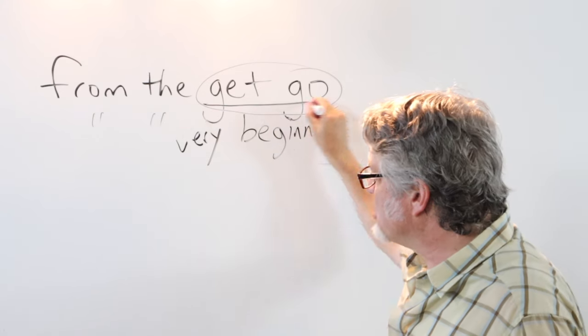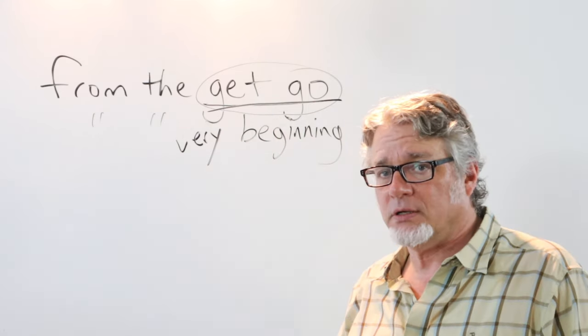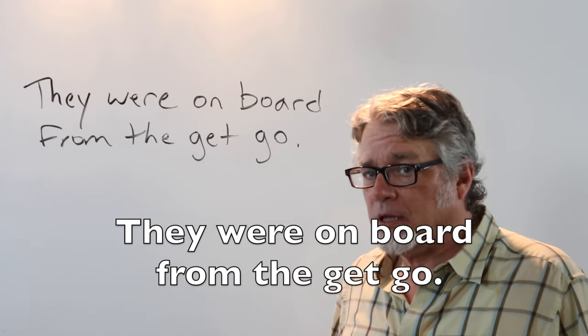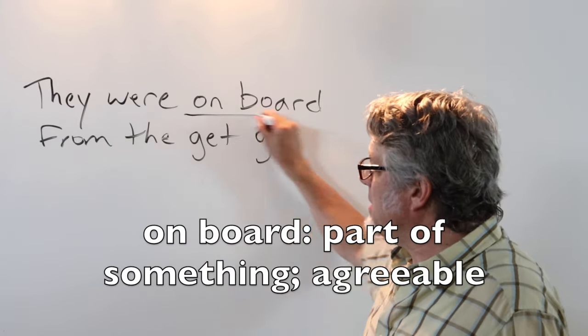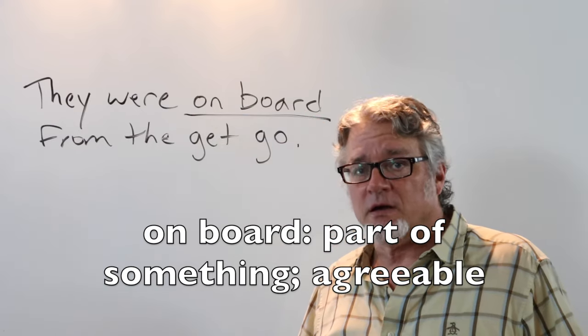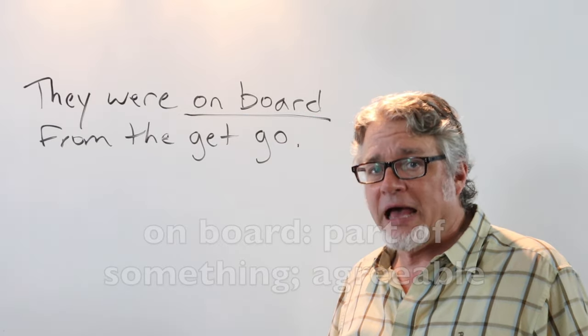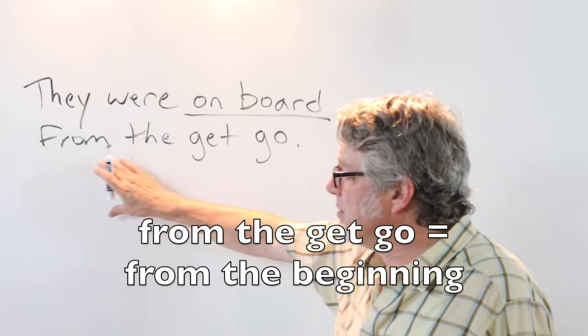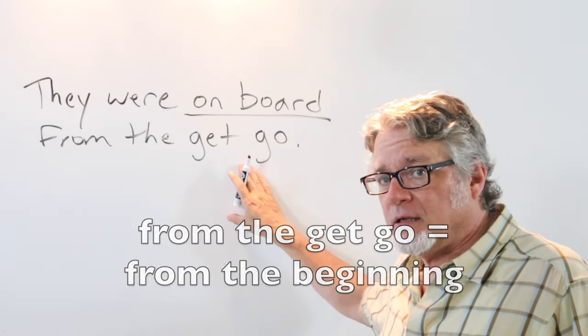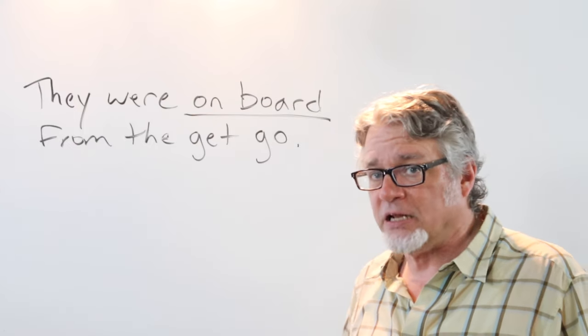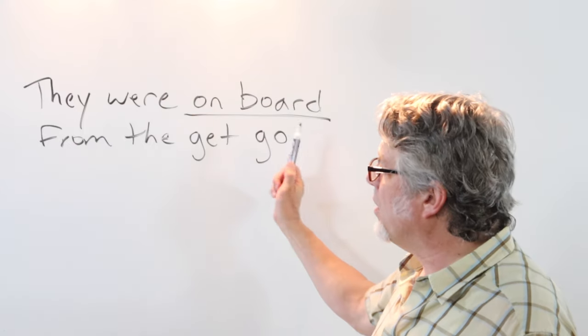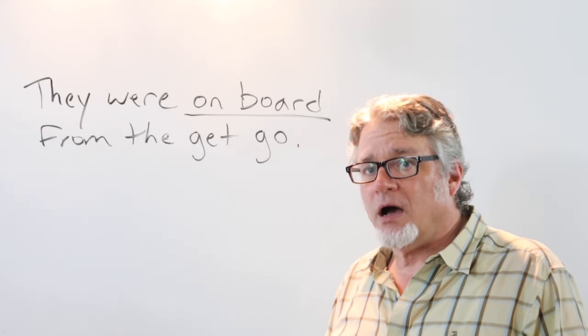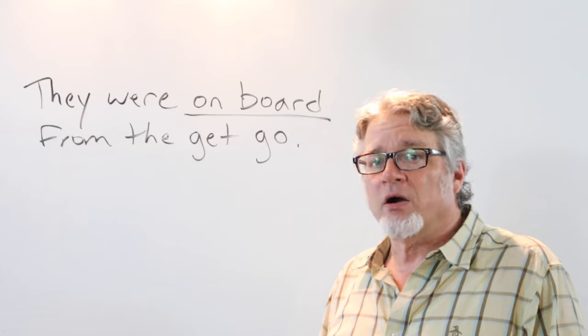They were on board from the get-go. On board means part of the organization or the effort or the group, and here is from the beginning. This can be used for any kind of general situation, whether the situation is good or bad. You can use it when somebody agreed to be a part of something.